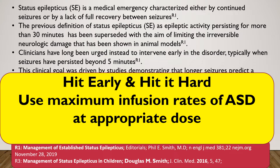This principle translates into practice as using the maximum infusion rates of anti-seizure drugs at appropriate doses. A common mistake is giving the drug too slowly due to worry about side effects, or giving only the lowest dose advised in textbooks. You have to give the appropriate dose — probably the maximum allowed — to truly hit it early and hit it hard.